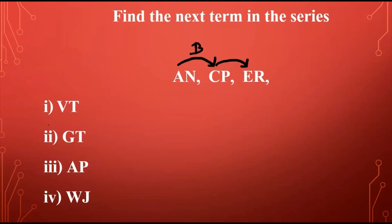So we know between A and C there's only one letter which is B — A, B, C. Between C and E, there's again only one letter — C, D, E. Which means between E and the first letter of the next term, there should be only one letter which is F — E, F, G. So the first letter in the next term should be G.